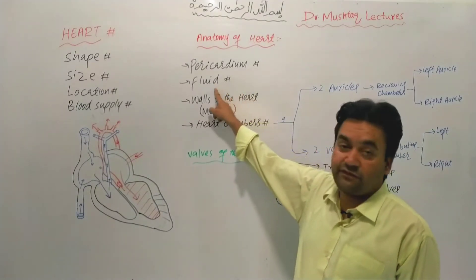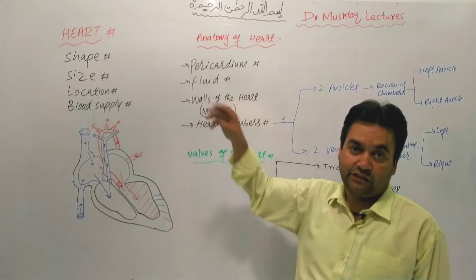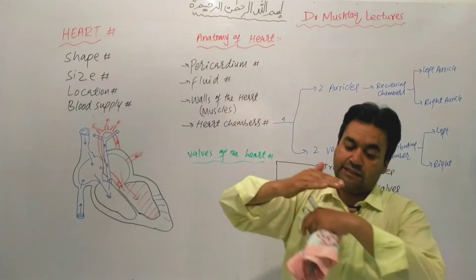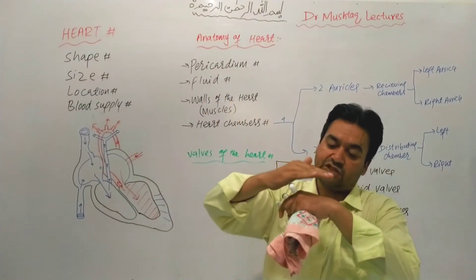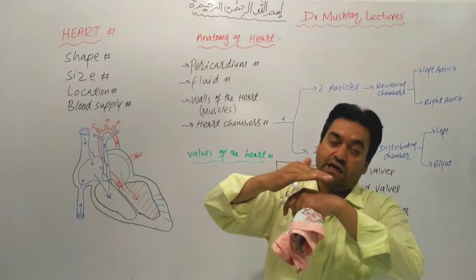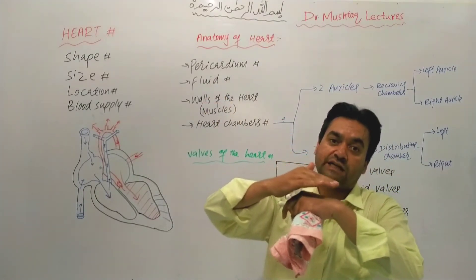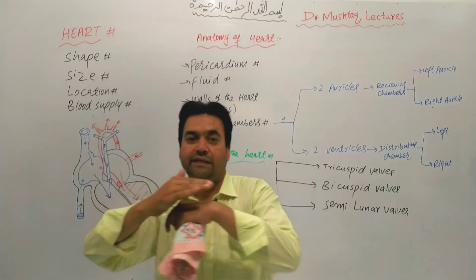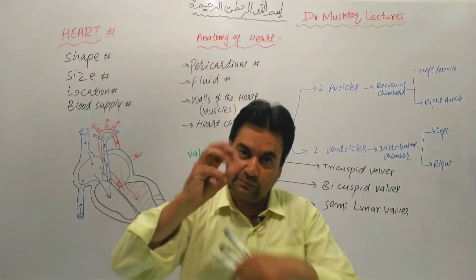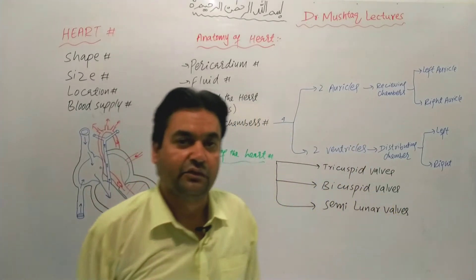The region surrounding the heart is called the Pericardium. Pericardium means it is a fluid-filled sac. The blood of the heart and the surrounding protective covering work together.